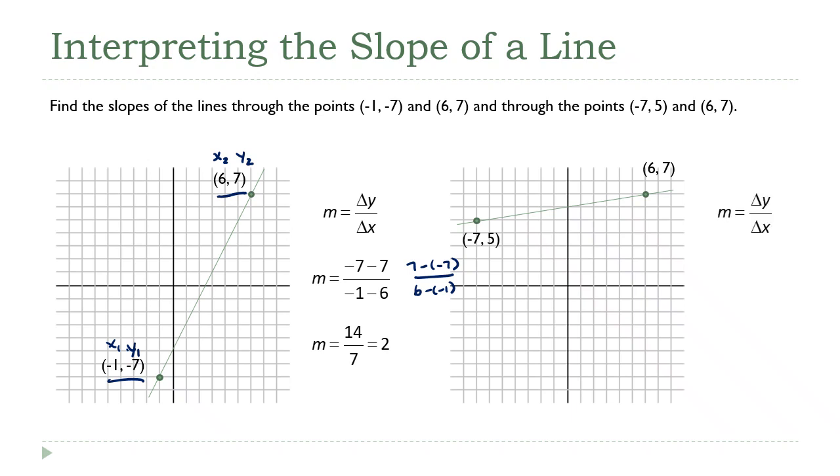And same formula, difference of the y values over difference of the x values. And if we put the numbers in here, we get 5 minus 7, that's the difference of the y's, over negative 7 minus 6. You do some simplification, that comes out to 2 thirteenths.